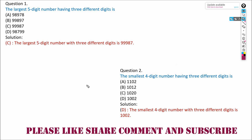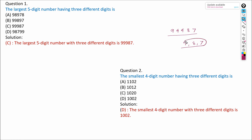Let us see the first question: the largest five-digit number having three different digits. We have to write the largest five-digit number having three different digits. If I write 99987, this will be the largest five-digit number having three different digits. The different digits are 9, 8, and 7 — these are the three digits, and using these three digits we can write the largest five-digit number.